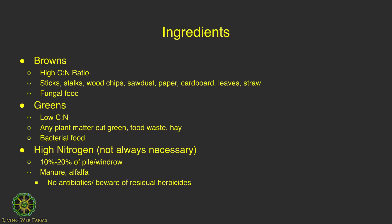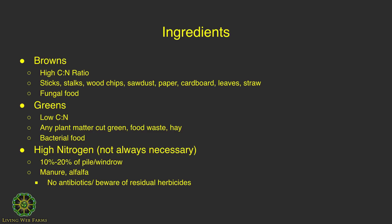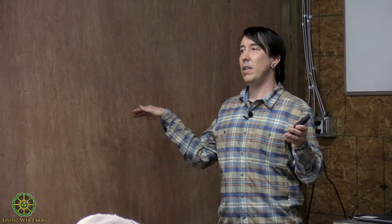The brown stuff we put in a pile is going to be more fungal food. Saprophytic fungi eat away at things with more cellulose and lignin, so things that are stalks, sticks, and leaves are going to be more food for the fungi.